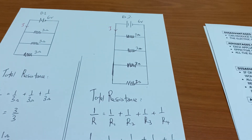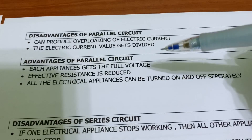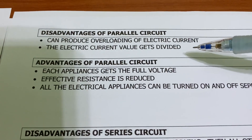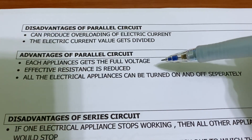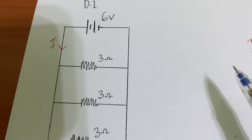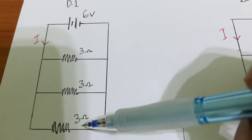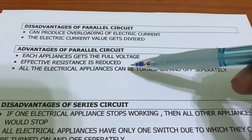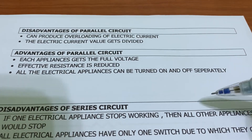Let's look at the advantages and disadvantages of a parallel circuit. Disadvantage: it can produce overloading of electric current, as shown, and the current value gets divided among branches. Advantages: each appliance gets the full voltage equal to the source — for example, if the source is 6 volt, each appliance gets 6 volt. Also, effective resistance is reduced, and all electrical appliances can be turned on and off separately.